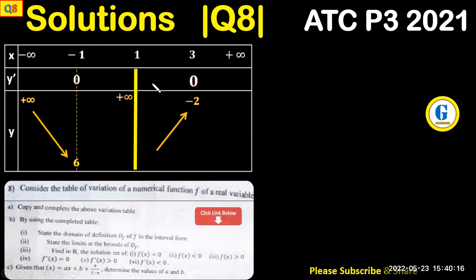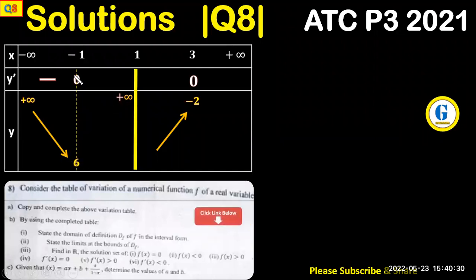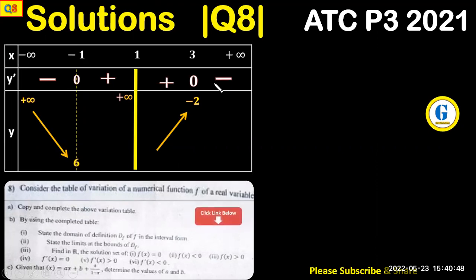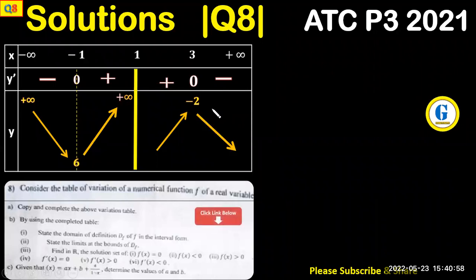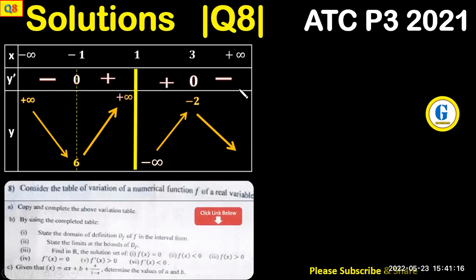Let us start by looking at the monotonicity of this function. In this interval we have a negative case — decreasing from positive infinity to 6. Since the value of y prime here is zero, it indicates a turning point, so it should now increase from 6 to positive infinity. Here it's increasing, then decreasing. Since this is a vertical asymptote, the limit as x tends to 1 from above should be negative infinity, so this one increases from negative infinity to negative 2 and decreases from negative 2 back to negative infinity. This is what we have — the table is now copied and completed.